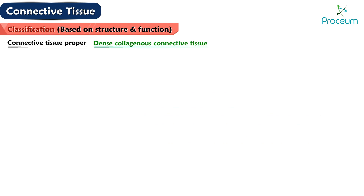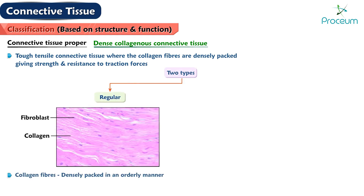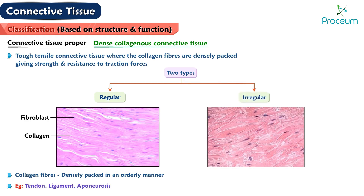Dense collagenous connective tissue is a tough, tensile connective tissue where the collagen fibers are densely packed, giving strength and resistance to traction forces. It is of two types: regular, where the collagen fibers are densely packed in an orderly manner — for example, tendon, ligament, aponeurosis — and irregular, where the collagen fibers are densely packed but oriented in all directions — for example, the dermis of skin.